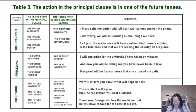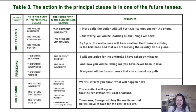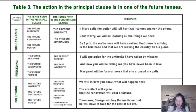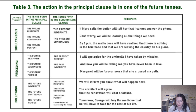And in English, finally, there is this case where Russian coincides with English. For example: 'We will inform you about what will happen next.' Or: 'The architect will agree that the renovation will cost a fortune.' We didn't pay yet and didn't talk to the architect — it's all in the future.